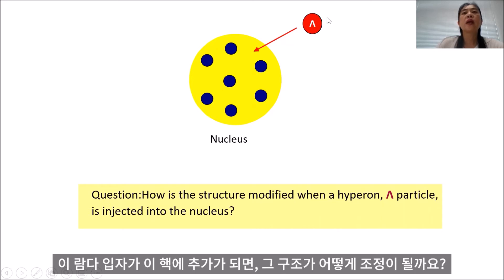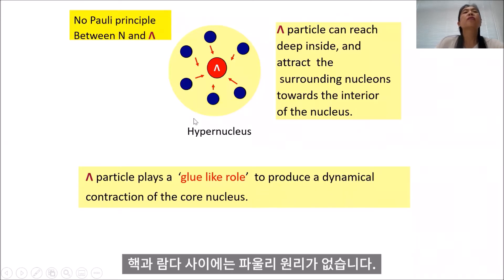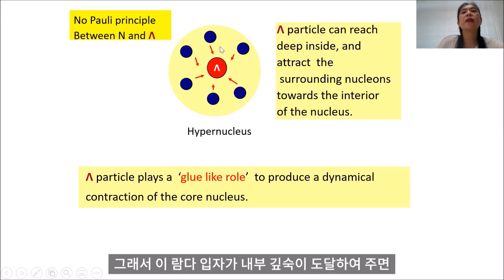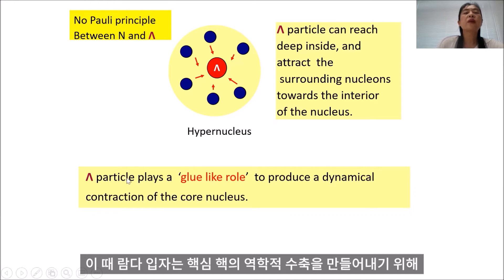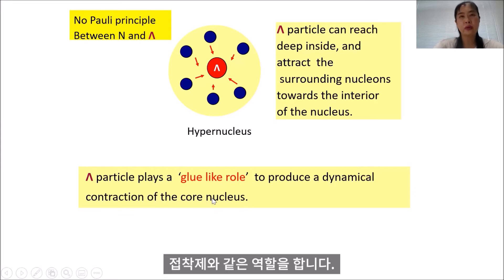If one lambda particle is added to this nuclei, how is the structure modified? There is no Pauli principle between the nucleus and lambda. Then lambda can reach deep inside an attractive surrounding nucleus towards the interior of the nucleus, and lambda particle plays a glue-like role to produce a dynamical contraction of the core nucleus.